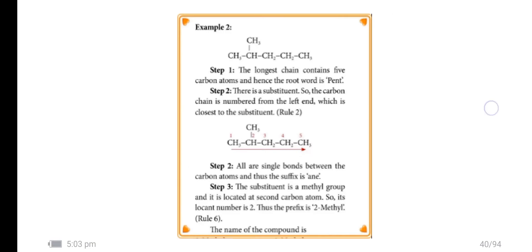Example 2: CH3-CH2-CH2-CH2-CH3 with one CH3 branch. The longest chain contains 5 carbon atoms and hence the root word is pent. There is a substituent, so the carbon chain is numbered from the left end: 1, 2, 3, 4, 5.